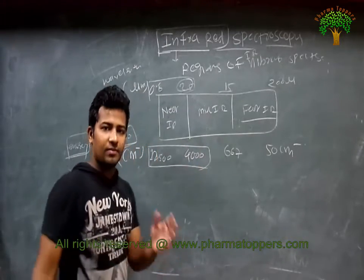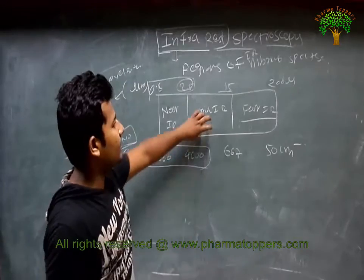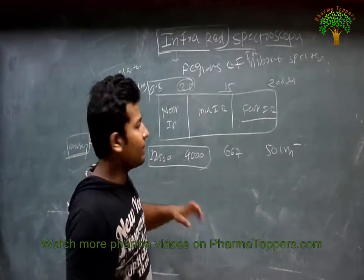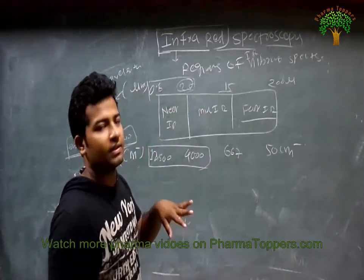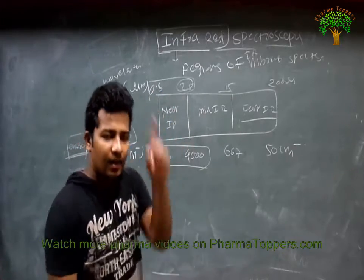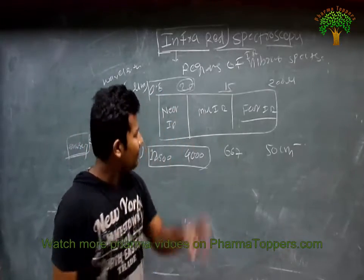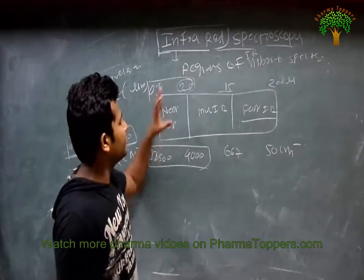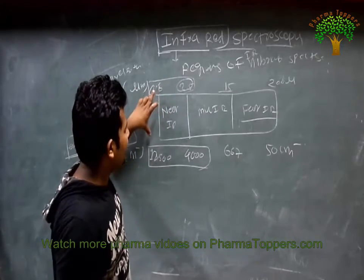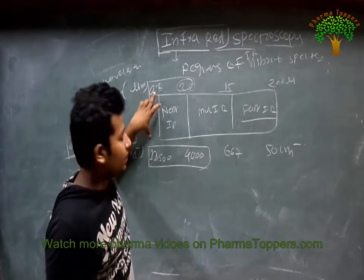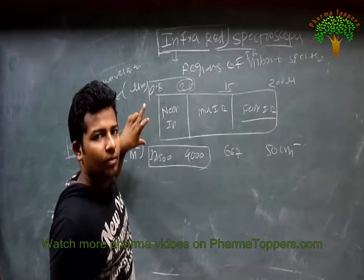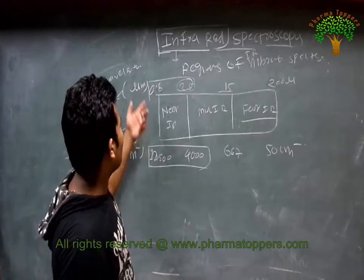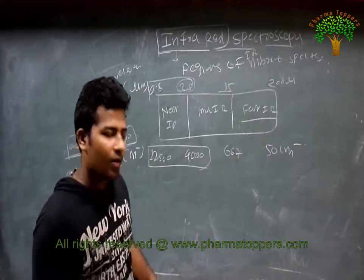Remember, these are also asked in many examples. For instance, what is the mid IR range in wavenumber? That's why you have to prepare for both units. Very simple calculation — remember only one region, and then inter-convert the wavelength with the wavenumber. How? We have already discussed one formula for how to convert wavelength into wavenumber.